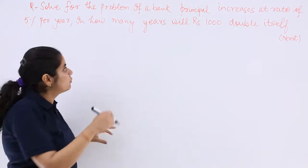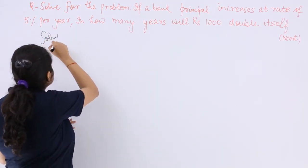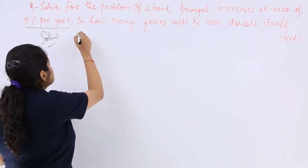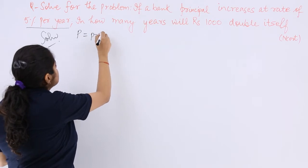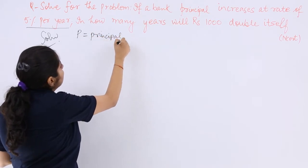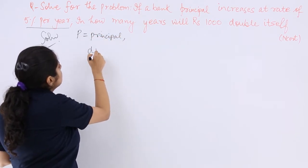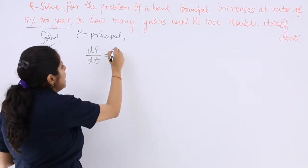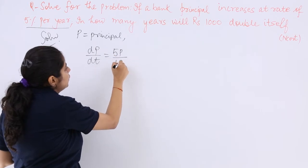So what is the rate of interest? The rate of interest is given to you as the increase which is 5% per year. If P is the principal, let P be the principal amount. I know that what has been given to me is dP/dt, the rate of change, which has been given as 5% per year.